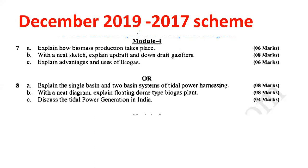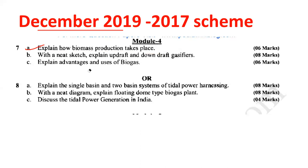Let's see another question from December 2019. Question 7a: explain how biomass production takes place — you have to explain that. That particular question carries a weightage of 6 marks.